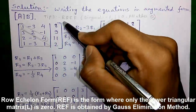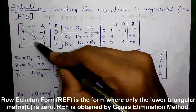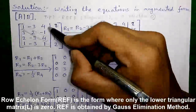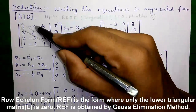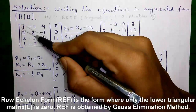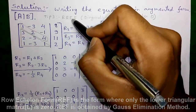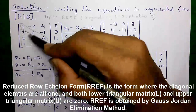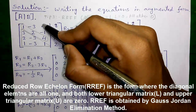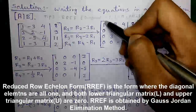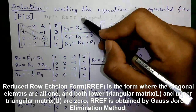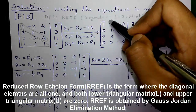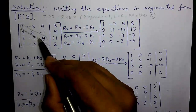The row echelon form (REF) is where only the lower part is zero and diagonal elements are intact, with upper elements remaining — obtained by Gauss elimination. In reduced row echelon form, diagonal elements are one, all elements below and above are zero — obtained by Gauss-Jordan elimination. I have a separate video explaining both methods you can check.